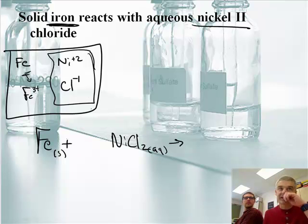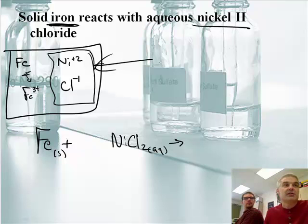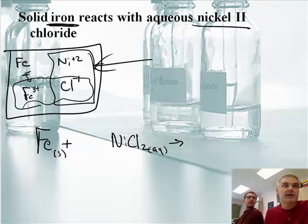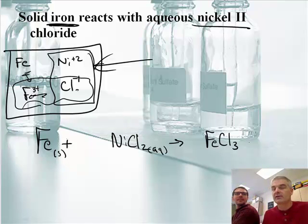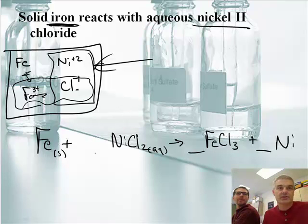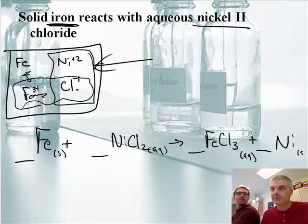Now we're going to trade partners. I'm going to look at my box to determine what the formula is. We're going to put iron with chloride — that's FeCl₃, because to get the charges to add up to zero it's FeCl₃. Plus poor nickel — he gets kicked out. That is the answer, not including states of matter. The FeCl₃ will be aqueous and nickel will be a solid.